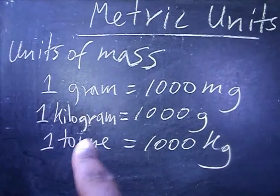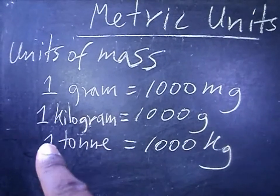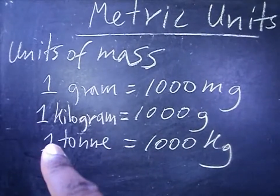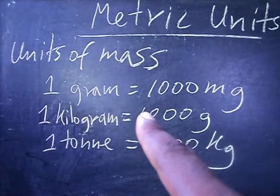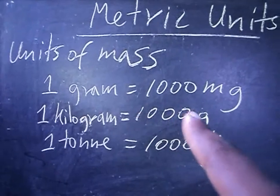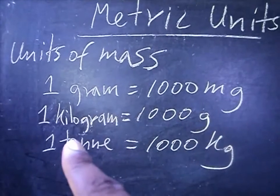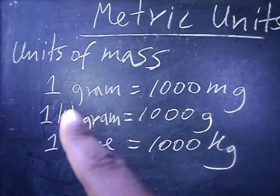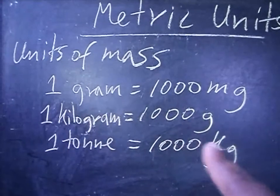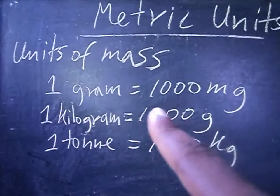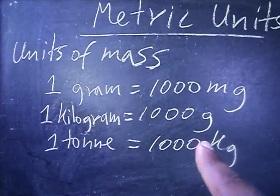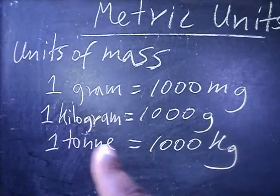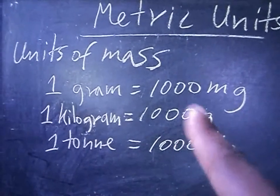1000 kilograms is equal to one tonne. So how many grams do you think are in a tonne? We have a thousand grams in one kilogram, and a thousand kilograms in one tonne. Multiply a thousand by a thousand and you get a million — a million grams in one tonne.